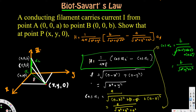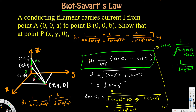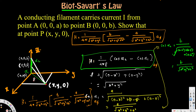Now plug everything into the equation. H equals 1 over 4π rho, where rho is square root of x squared plus y squared, multiplied by cos alpha two — which is b over square root of x squared plus y squared plus b squared — minus cos alpha one, which is a over square root of x squared plus y squared plus a squared. This is in the a-phi direction, and therefore we have proved the expression. That's how we do this kind of problem.